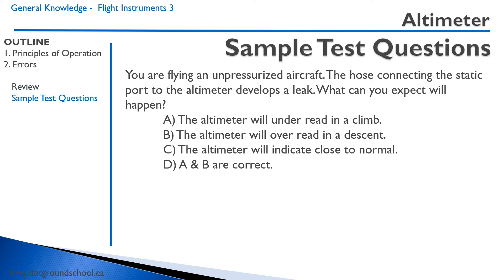Our first sample question: You are flying an unpressurized aircraft. The hose connecting the static port to the altimeter develops a leak. What can you expect will happen? A. The altimeter will under-read in a climb. B. The altimeter will over-read in a descent. C. The altimeter will indicate close to normal. D. A and B are correct. Recall we're not talking about a blockage — we are talking about a leak. This is an unpressurized aircraft, meaning the pressure outside by the static port and inside the aircraft will be approximately the same. So because the pressure is the same inside and outside, the altimeter will indicate close to normal. The answer is C.